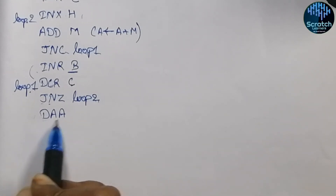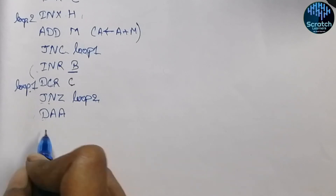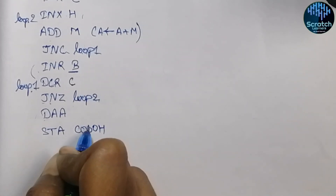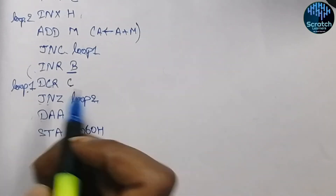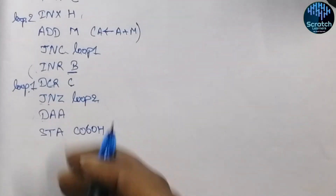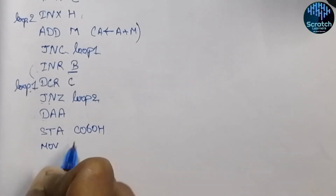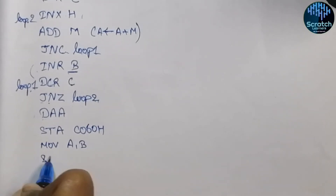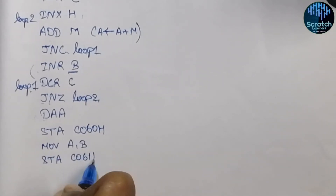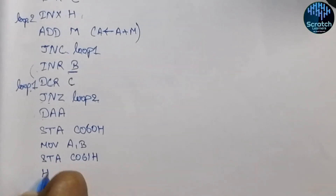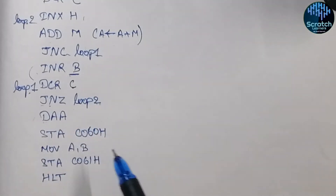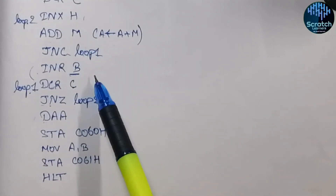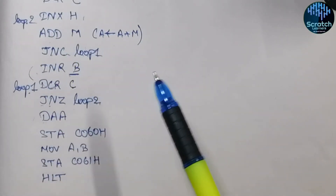Now the last task is to store our results. The main part of the result is in the accumulator, so first store that data into memory address C060H. We also need to store the carry part — move the content of B register into the accumulator, then store that result into memory address C061H. Then HALT. This is how we find the summation of N BCD numbers — here we have added five numbers as we initialized C with 05H.